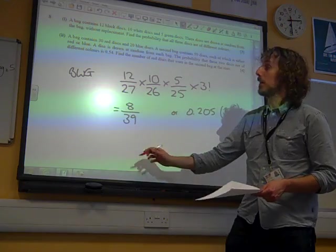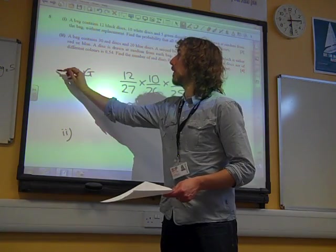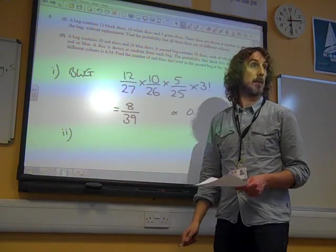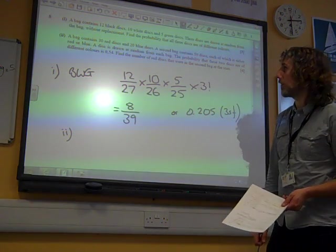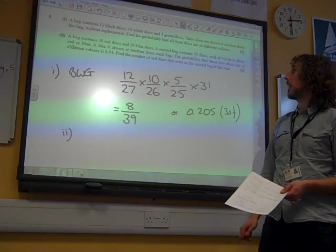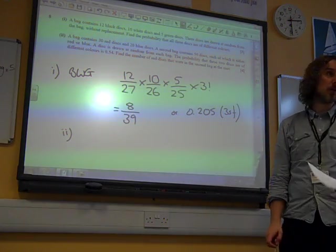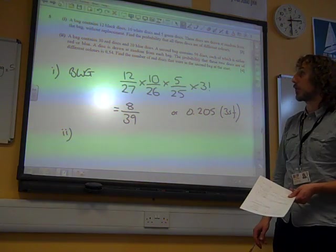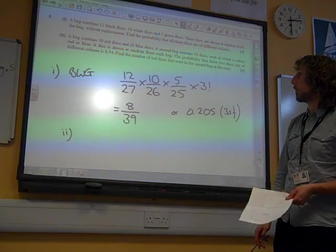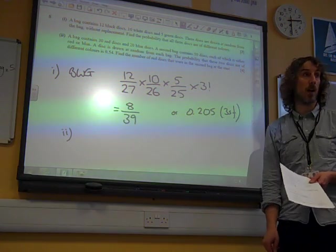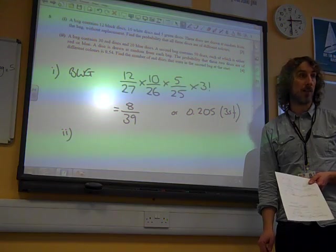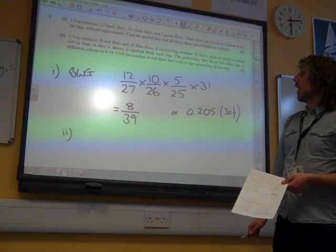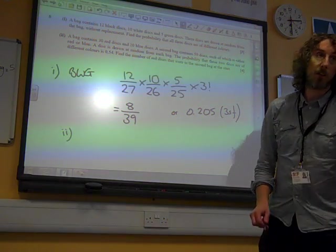Much better to think about it as a combinations and permutations kind of question. Now then, part two. Part two. A bag contains 30 red, 20 blue. A second bag contains 50 discs, each of which is either red or blue. A disc is drawn at random from each bag. The probability that the two discs are of different colours is 0.54. Find the number of red discs that were in the second bag at the start.